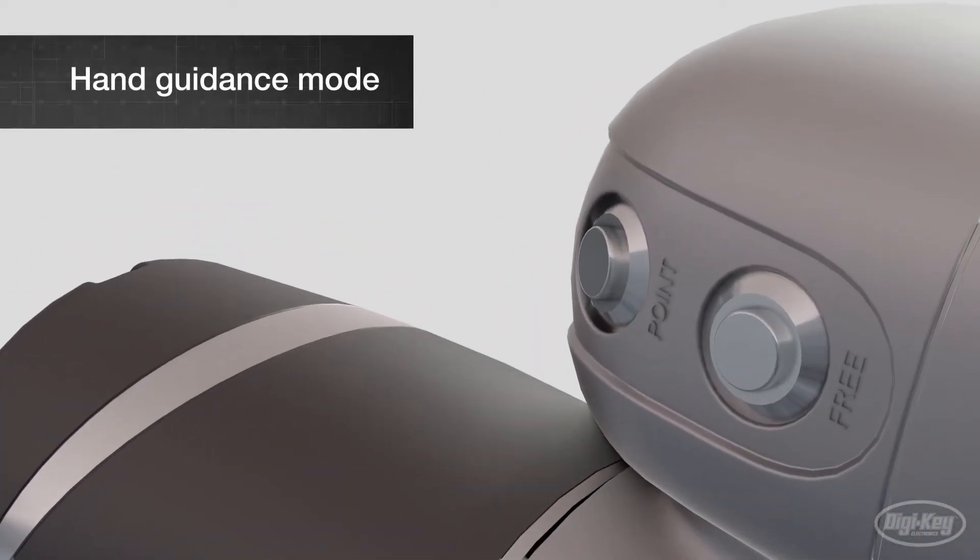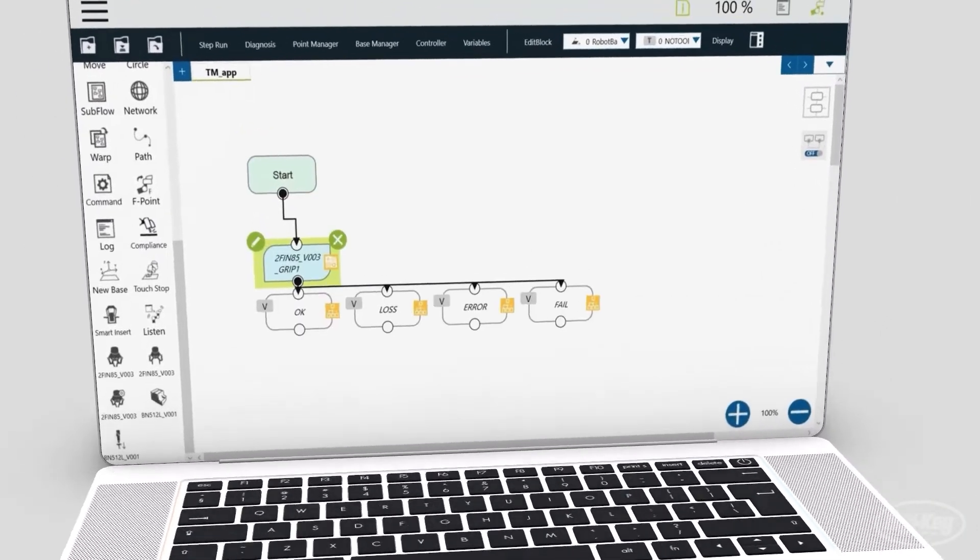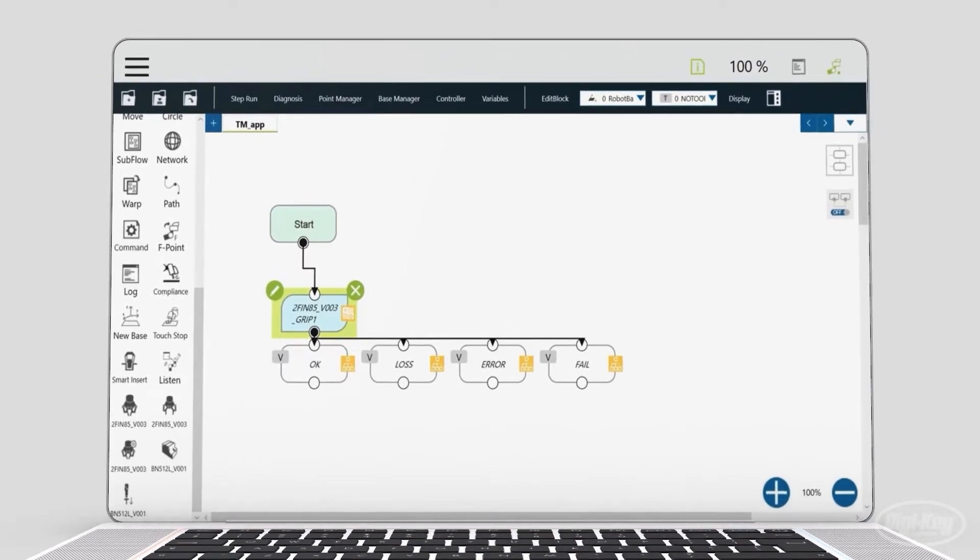Hand Guidance mode allows users to set points and assign tasks using buttons on the co-bot arm without any programming, while an intuitive graphical programming interface can be used to create full workflows with minimal training.